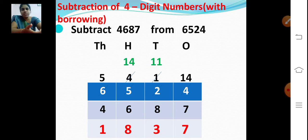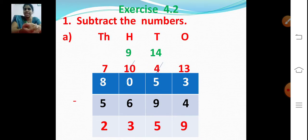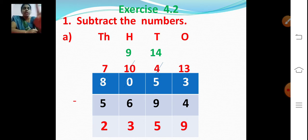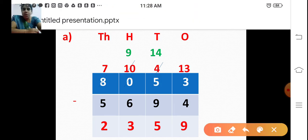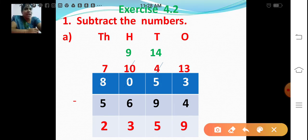Now let's move on. Exercise number 4.2 — subtract the numbers. Copy down in your notebook. Exercise number 4.2, first one: we are going to subtract 8,053 minus 5,694.